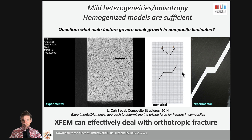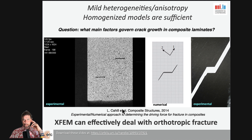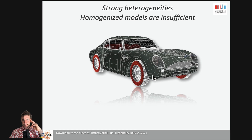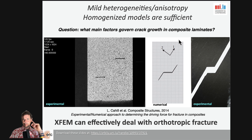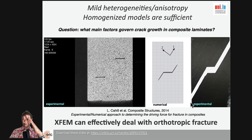In anisotropic materials, they have a preferential direction — they are anisotropic, and you would like to see results similar to experimental results. The question is: if you propagate the cracks, in which direction are they going to propagate? We were able to deal with that using an approach for the J-integral, published in Composite Structures in 2014 by Lisa Cahill. The second point is when we have strong heterogeneities where homogenized models are insufficient. For example, we don't take into account carbon fibers aligned at a certain angle in the material, but experiments show that fracture propagates along the fibers because they are too resistant to break.